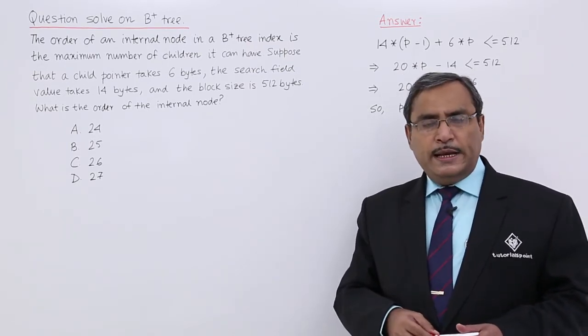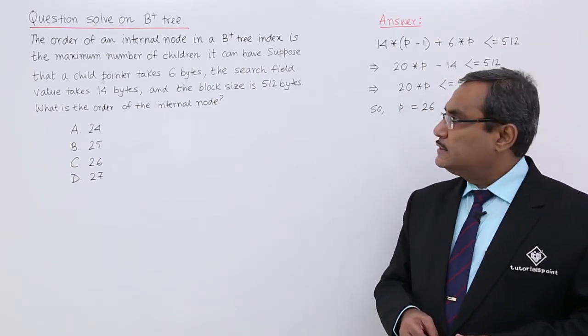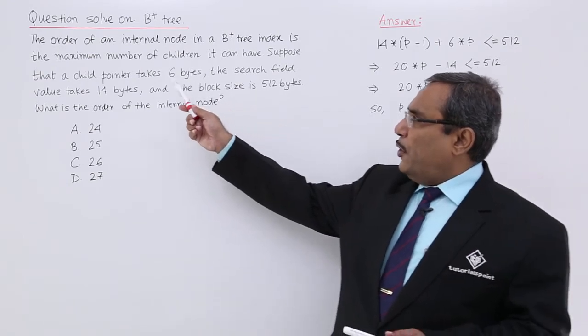We know that if we are having p number of pointer fields, then we will be having p minus 1 number of search info fields. In this case, pointer takes 6 bytes.